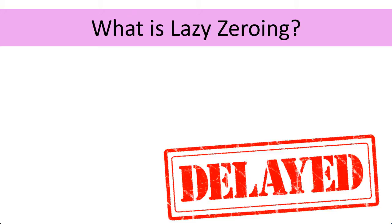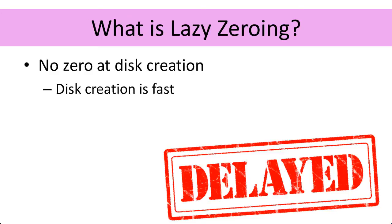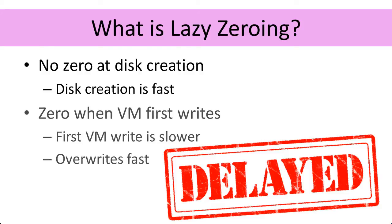When we create the virtual machine disk file, we just allocate the blocks to it. We don't touch those blocks at creation time, and this means that creating the disk is really fast — we've just got to say this collection of blocks on the underlying data store makes up an actual disk. Disk creation is very fast, and you as the administrator can get on with your piece of work after that, maybe starting the install of the operating system. The zeroing then happens when the virtual machine first writes to the disk.